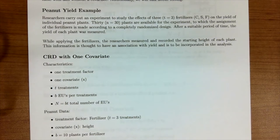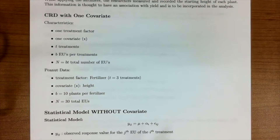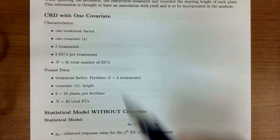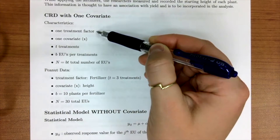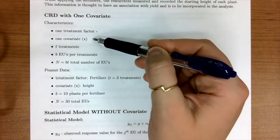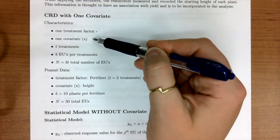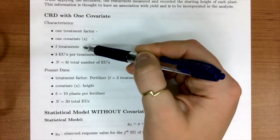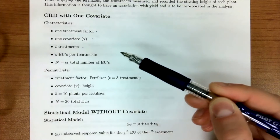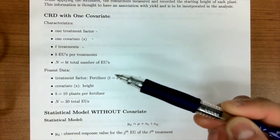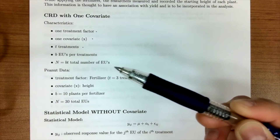We're going to talk about some characteristics of a completely randomized design with one covariate. Our characteristics are that we have one treatment factor — in this case, the fertilizer — and one covariate, which is the starting height of the peanut plants. We have T treatments and B experimental units (EUs) per treatment, giving us a total of B times T EUs.